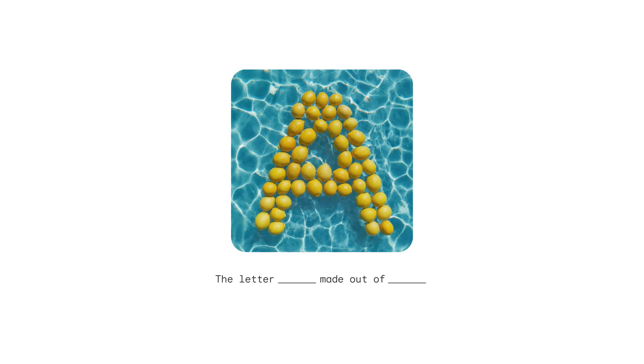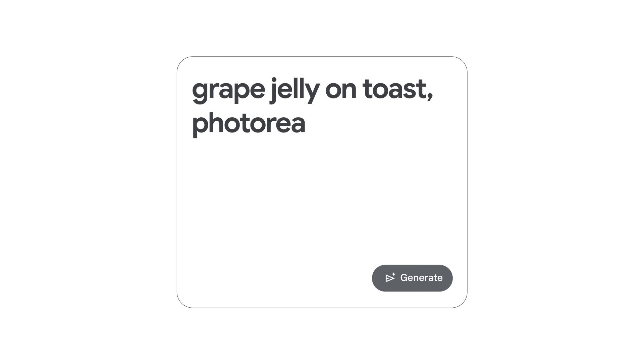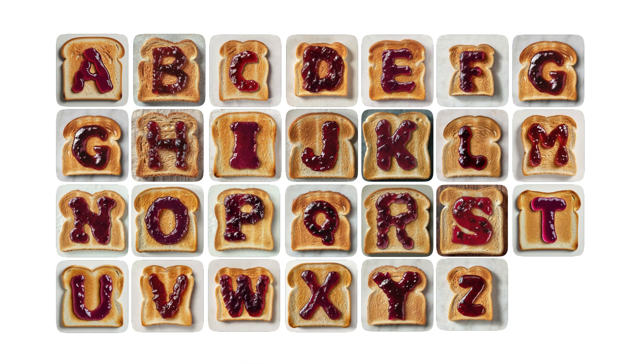We made GenType using Google's Imagine model in a simple prompt recipe: the letter of the alphabet made out of whatever you type in. For example, this image was made just with the prompt: the letter A made out of lemons floating in water. What's cool about the GenType tool is it goes from one prompt into 26 sub-prompts for each individual letter, and then does all the letter generations at once.